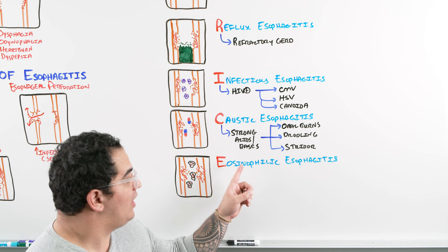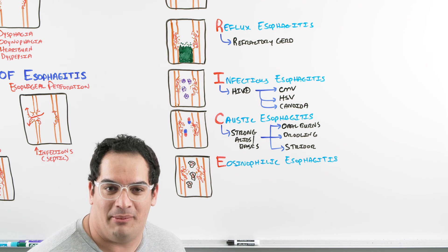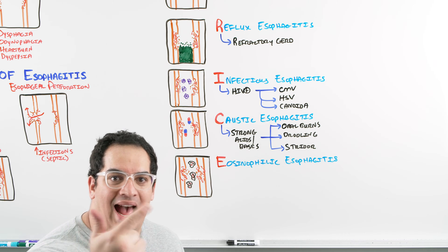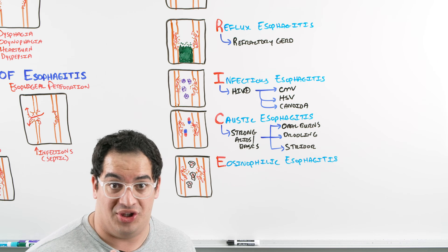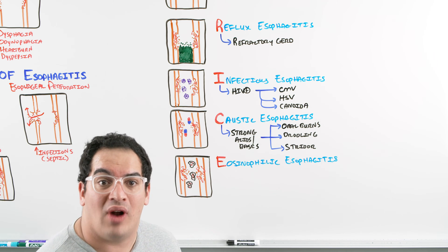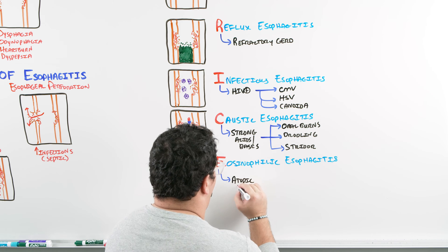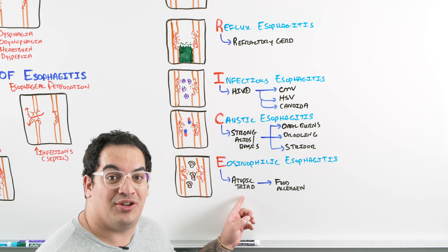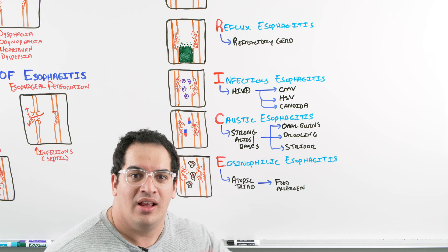Again, caustic esophagitis: strong acid, strong base, really tearing up the esophagus but also the oral cavity, pharynx, and upper airway. High risk of perforation. The last one is eosinophilic esophagitis. Eosinophils are infiltrating the esophagus and causing massive amounts of inflammation. What's the trigger? Look for a patient with the atopic triad: asthma, allergies, and some type of atopic dermatitis. Usually they eat a particular food they have a natural allergy to, and it triggers eosinophilic infiltration of the esophagus and inflames it up.